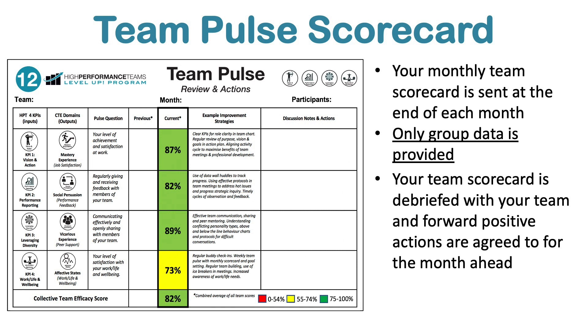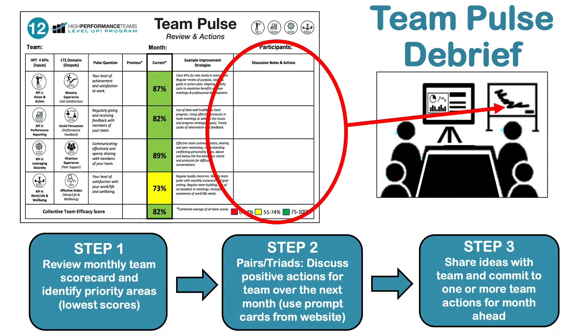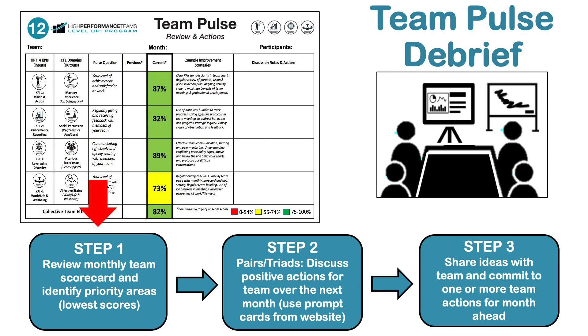One of the most powerful parts of the team pulse system is the actual conversation we have as a high-performance team about how we can improve team health over the month ahead — and that's the debrief protocol. A team pulse debrief has three steps: identifying the priority areas from our scorecard, looking at possible actions we could add to team activity over the following month to improve team health, and then making a conscious decision and commitment to do things differently in the month ahead.